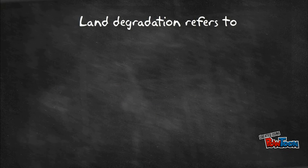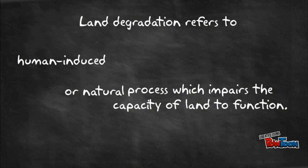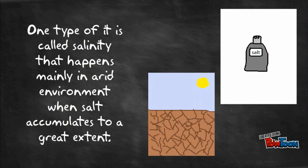Land degradation refers to human-induced or natural process which impairs the capacity of land to function. One type of it is called salinity that happens mainly in arid environment when salt accumulates to a great extent.